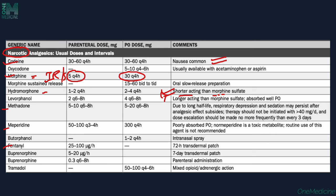Tramadol can be used both perorally and parenterally — parenteral 25-50mg and oral 50-100mg every 4-6 hours depending on severity. Opioids have significant side effects including constipation and addiction potential. Do not randomly prescribe opioids — if the patient still has pain after NSAIDs, find the underlying cause first. Maybe steroids or other treatments can address the underlying inflammation before jumping to opioids.